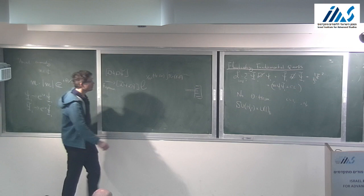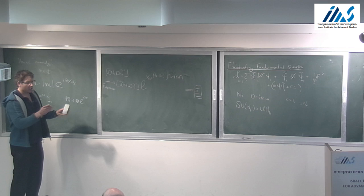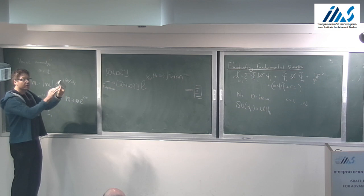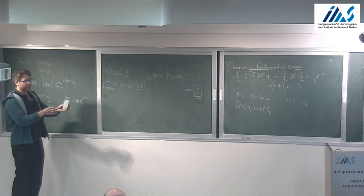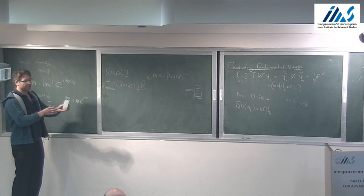However, this transformation does not leave the measure invariant. The measure over the fermions is not invariant under this transformation - this was computed by Fujikawa and is exact to all orders. The measure transforms by a phase: i over 8 pi squared times N_f times 2 alpha times an integral of F-tilde F. This shifts the theta parameter by N_f times 2 alpha, so shifting theta and shifting the phase of the mass is the same thing.